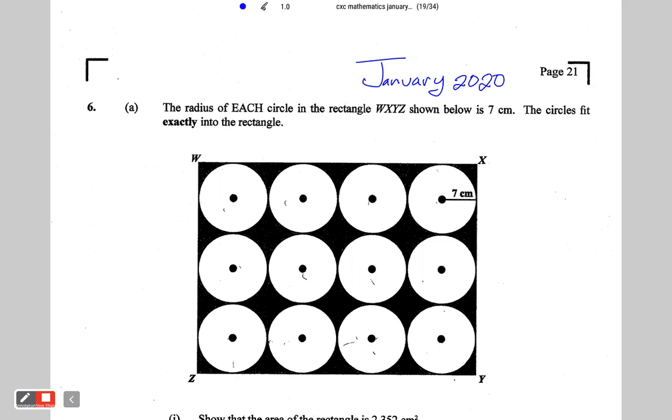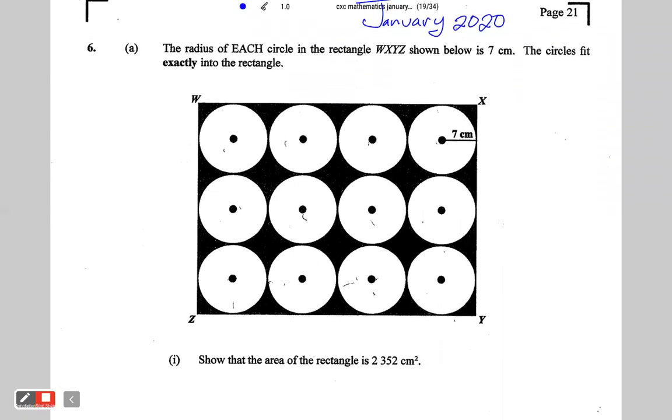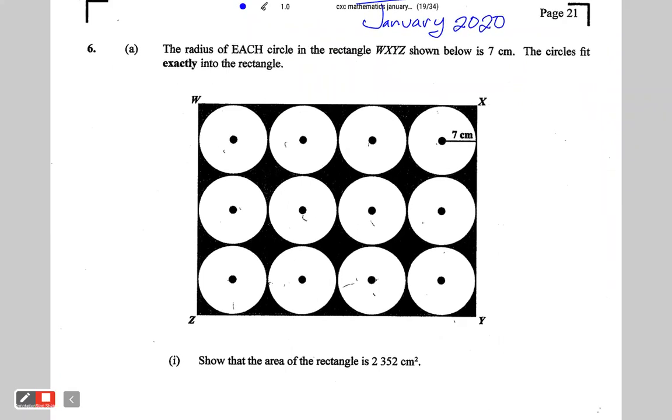The circles fit exactly into the rectangle. By saying that, what the examiner is saying is that there is essentially no space between the circles. Regardless of how it looks, the examiner is telling you there is no space between the rectangles. Then he says, show that the area of the rectangle is 2,352 centimeters squared.